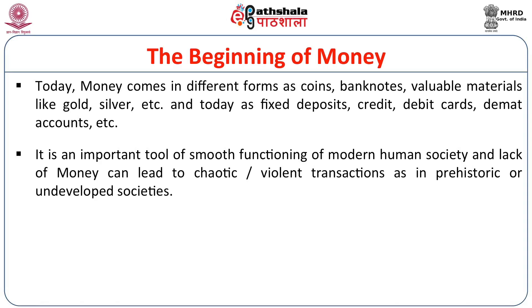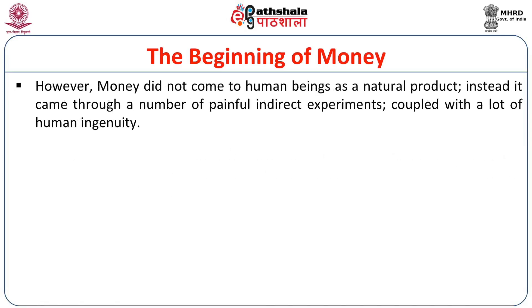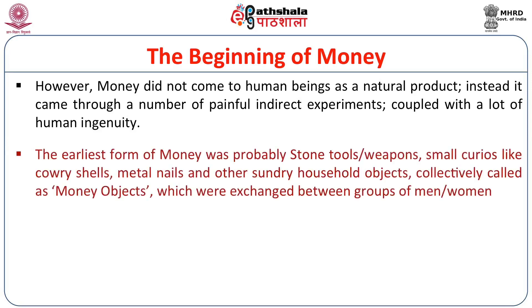This was not the case in prehistoric or undeveloped societies. In that period, money did not come as an immediate object — it was not a natural product. Instead, it came through painful indirect experiments coupled with a lot of human ingenuity. At various periods of human history, we see various objects which functioned as money — not only coins. Many objects were earlier termed as barter objects, but today we term them as money objects, because their function is better understood.